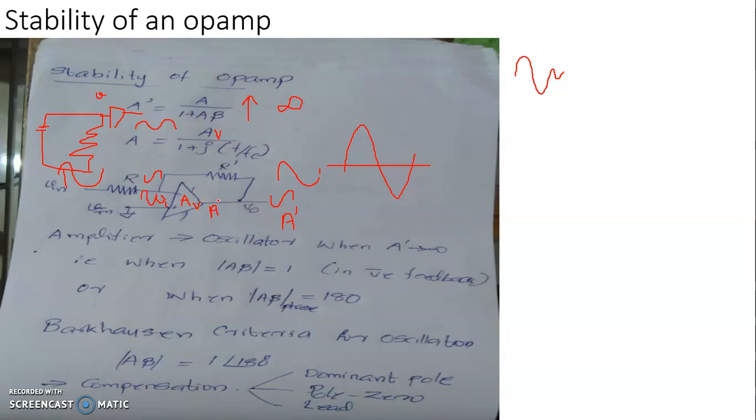Once that happens we assume that it is no longer functioning as an amplifier, instead it is functioning as an oscillator. We will say that it is not stable as an amplifier, instead it's stable as an oscillator. The instability condition for an amplifier is in fact the stability condition for an oscillator.